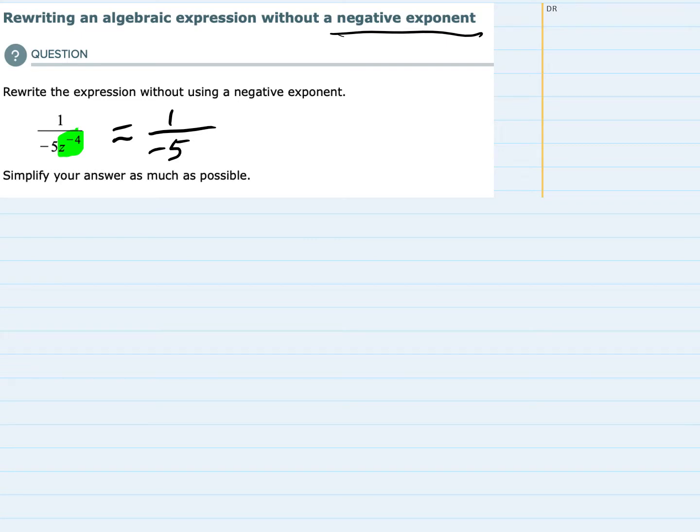So the z to the negative fourth in the bottom would move up as a z to the positive fourth power in the numerator.